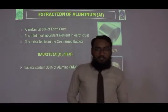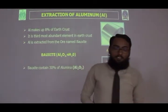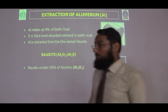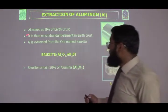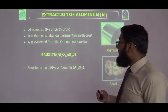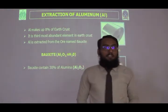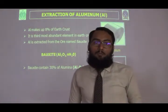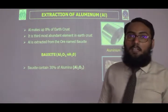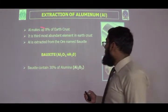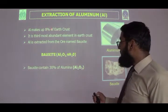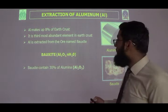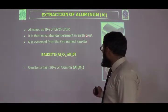After that, we will discuss the metallurgy of aluminium. First, aluminium makes up 8% of the earth's crust. It is the third most abundant element in the earth's crust, after oxygen and silicon. However, if we talk about metals only, aluminium is the first most abundant metal in the earth's crust.